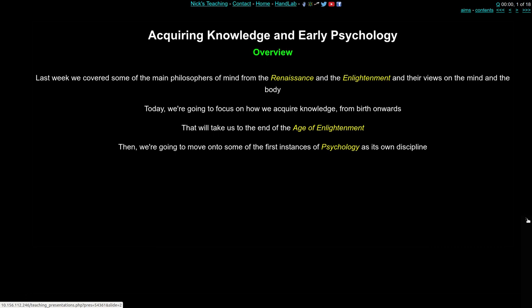Today we're going to focus on how we acquire knowledge from birth onwards, which will take us to the end of the Age of Enlightenment — that is the age in the mid-1500s through 1800s, where people were questioning perceived wisdom, religious and political organisations and beliefs. Then we'll move on to the first case of psychology as its own discipline, and that's the second half of this first lecture.